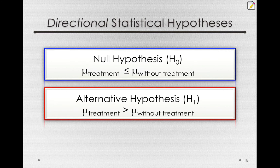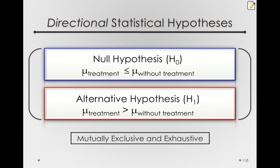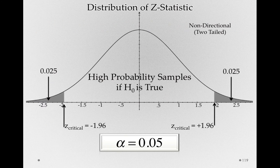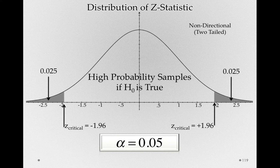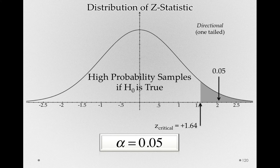Notice these are still statistically valid — they're mutually exclusive and exhaustive. One of these has to be true, and only one of these can be true. Now the consequence of doing this is that, if we look at our distribution of the z statistic under the null hypothesis, and if we're predicting that we will increase IQ scores, we're simply going to allocate all of alpha to the upper tail.